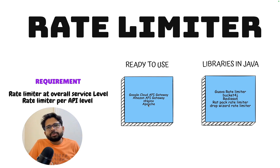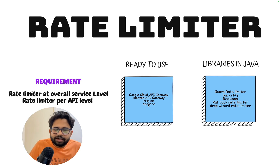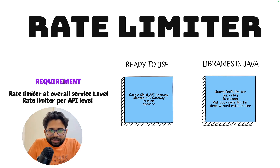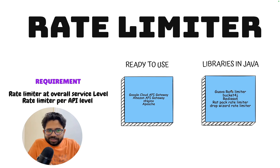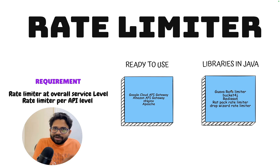At times you might not want to use a ready-made solution, or you might want to understand what happens internally. There are multiple libraries in Java which do rate limiting. For example, there is a Guava rate limiter, there is Bucket4j — which is a very common library that a lot of people use. There is also Radisson, Rateback, and DropWizard. There are multiple libraries, but what I'm going to do today is dig deeper into the Bucket4j library.